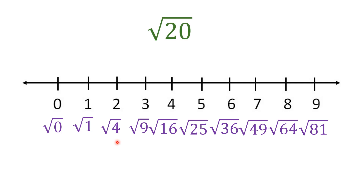Now, square root of 20. It falls in between 4 and 5 on the number line, because it's between square root of 16 and square root of 25. Notice that 20 is not exactly close to either 16 or 25 — it's roughly in the middle — so you can estimate the point right in between 4 and 5.